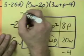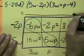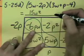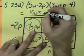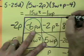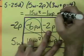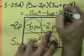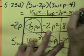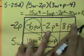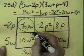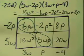I don't have enough space on the paper off to the side, so I'm just going to write it here. I have 15 W squareds. I have negative 6 and 5. That's going to be negative 1, and I'm going to say WP's. I'm going to have negative 2 P squareds, negative 20 W's, and then we have plus 8 P's.